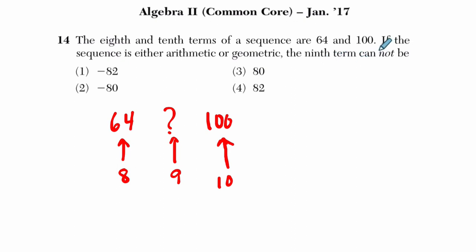The 9th term cannot be... So when they say the sequence is either arithmetic or geometric, what does that mean? It means you've got to either add some constant amount or multiply. It's got to be one or the other. So let's look at what it could be if you were adding or multiplying, and then figure out which of these choices it cannot be.